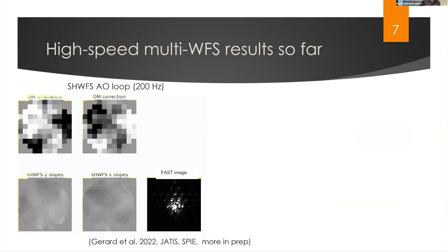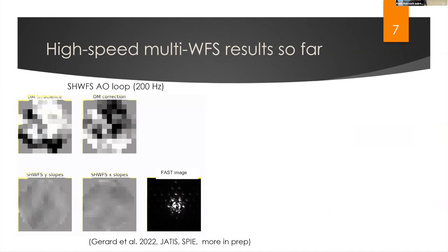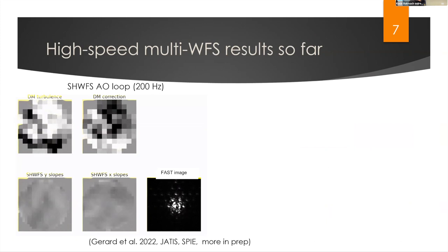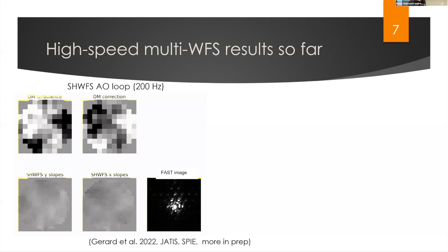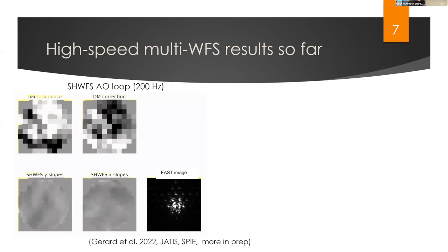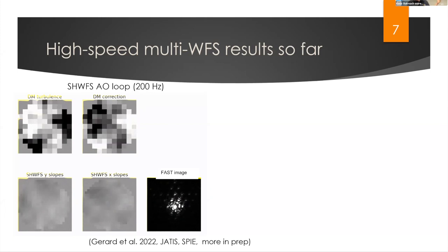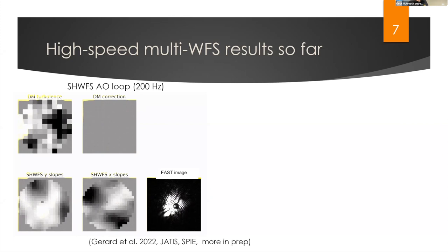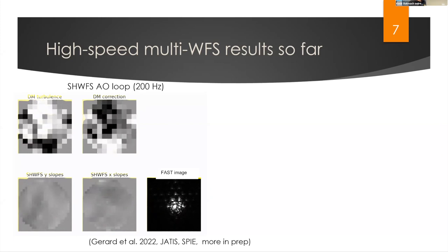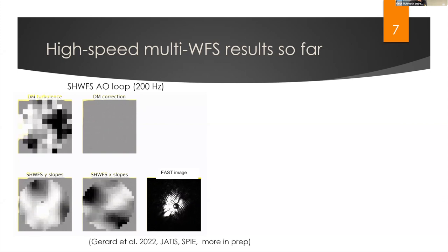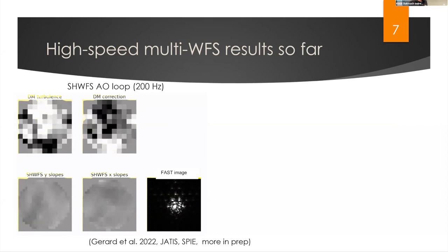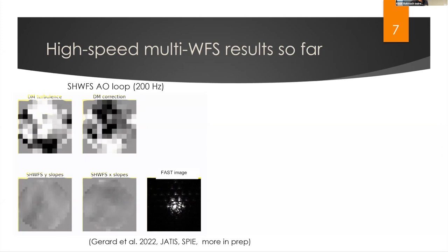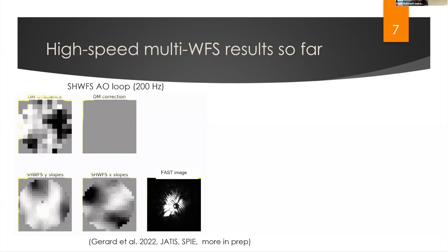Here's what we've been doing in the lab. We use a Shack-Hartmann wavefront sensor as the first-stage correction, simulating turbulence with the deformable mirror and then using the Shack-Hartmann to measure it. Here are the Y and X slopes — the deviation of spot positions with respect to a flat wavefront. When the deformable mirror correction turns on, the amount of aberration decreases, and you can see in the coronagraphic image that the blurred PSF gets much sharper. Now we can start thinking about second-stage wavefront sensing and control.